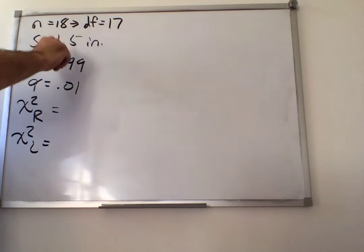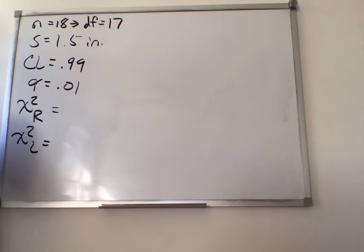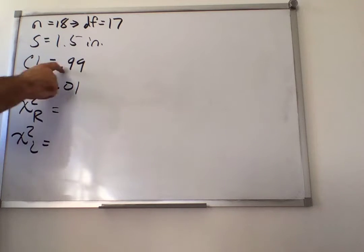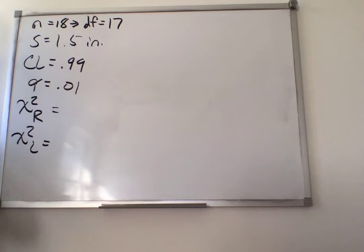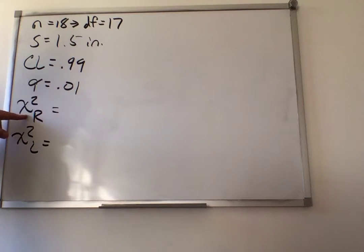Degrees of freedom 17, our standard deviation is 1.5, confidence level 99, alpha 0.01. We were about to find the chi-squared right values and the chi-squared left values.